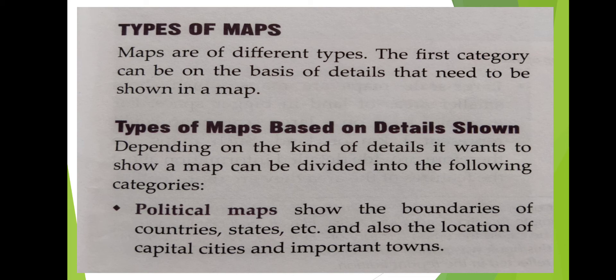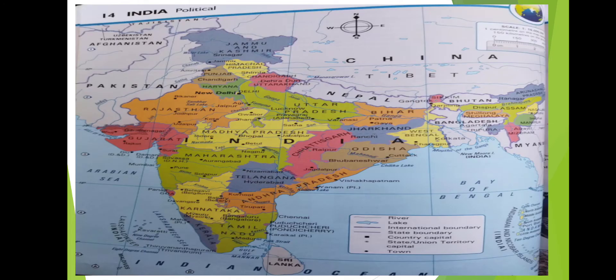Can you see this political map? In this political map, we can see the states and their capital cities and the country boundaries. Even some international boundaries and administrative divisions are also visible in this political map.